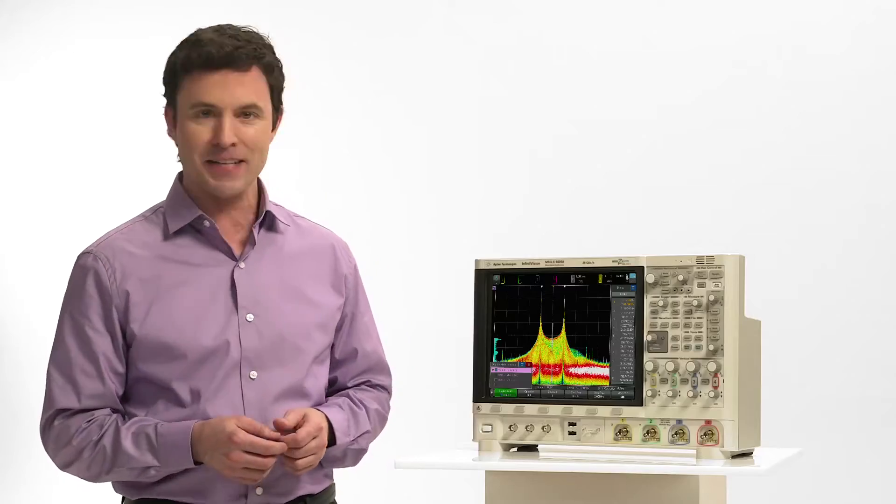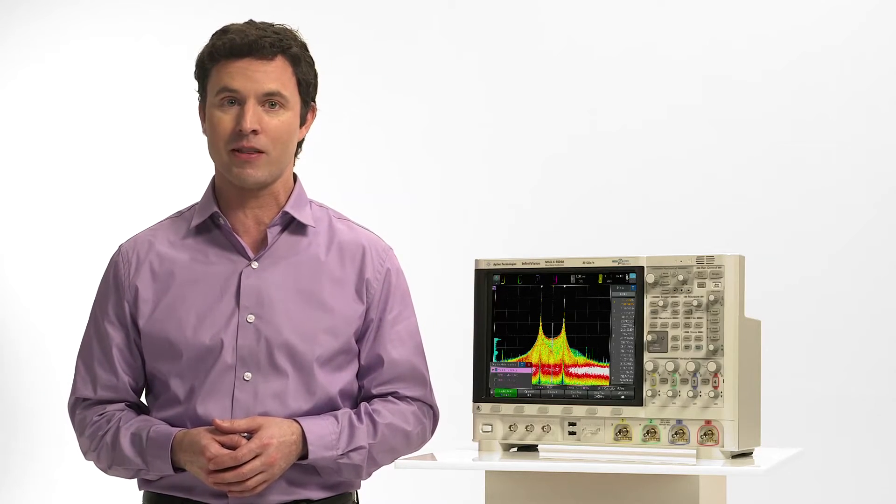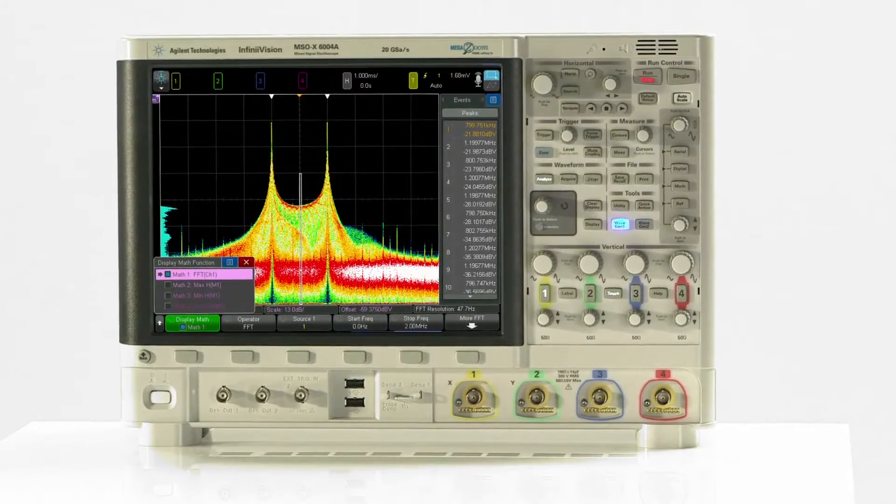The 6000x series is, in fact, the first scope in its class with up to 6 GHz bandwidth and 20 gigasamples per second, at less than half the cost of competing scopes.